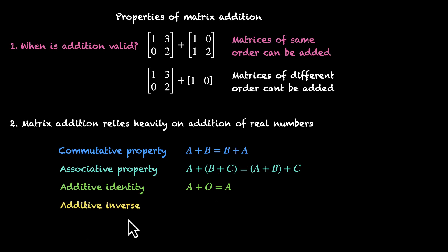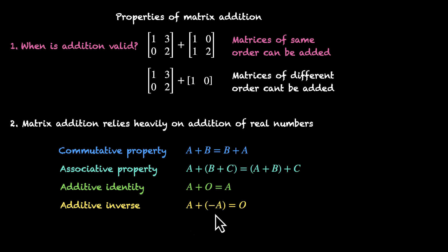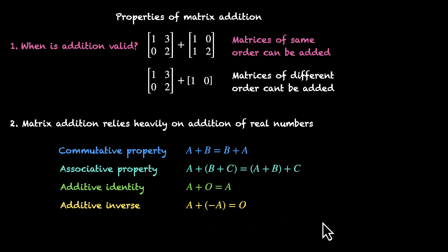Then we have additive inverse. This property says that for any matrix A, there exists an opposite — a minus A or negative A — that when you add it to A, you get the zero matrix. The same thing works for real numbers: for example, 10 and minus 10, 20 and minus 20, and so on.